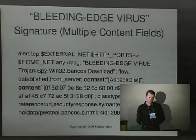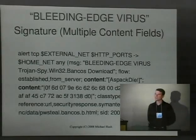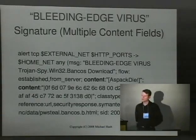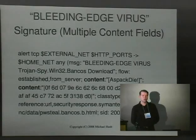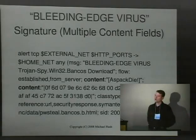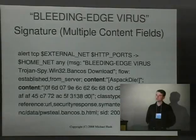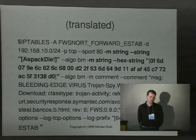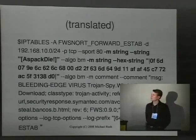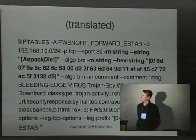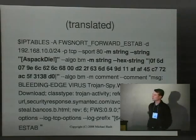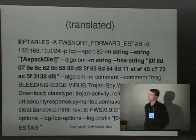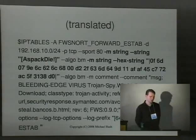Here's another Snort signature that's interesting because there are two content matches. IP tables in version 1.3.1 offers the ability to do multiple string matches, so you can look for multiple content strings within network traffic with FWSnort. Any Snort signature that uses multiple content matches can be expressed within an IP tables rule. Notice the usage of hex bytes — I added a patch to IP tables to use the same syntax that Snort rules do, allowing you to include hex bytes within vertical pipe characters verbatim, without an extra translation step.